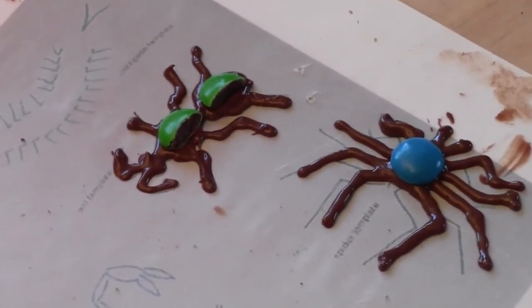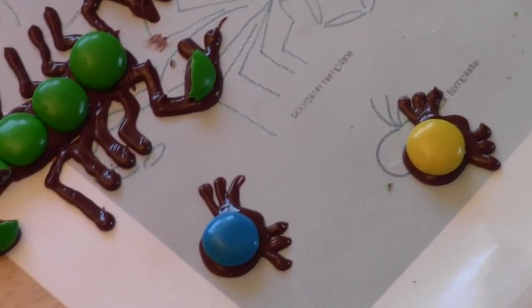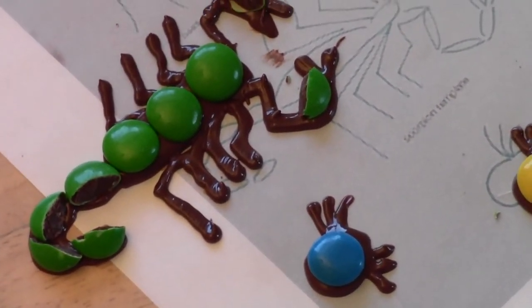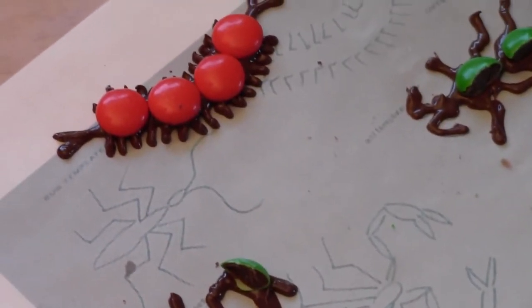So you've got an ant, a spider, got a couple of ticks, and our big scorpion. Oh, and we also have a centipede.